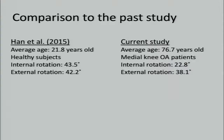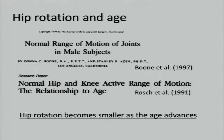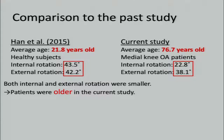There is only one prior report about the hip rotational angle in Asian patients. When comparing the hip rotational angle between that past report and the current study, both internal and external rotation angles were smaller in the current study. It is reported that rotational range becomes smaller as age advances, so the smaller rotational range may be due to the older age of the patients in the current study.